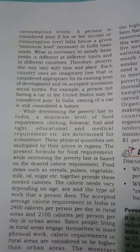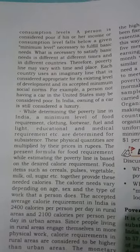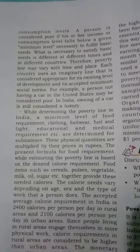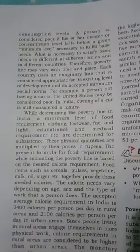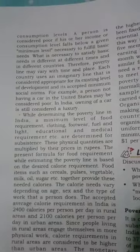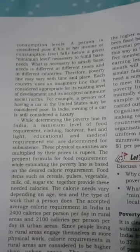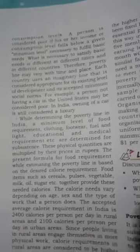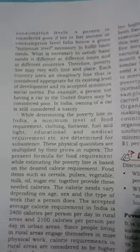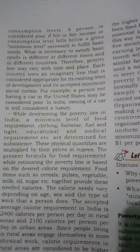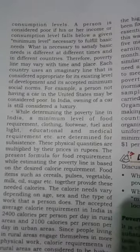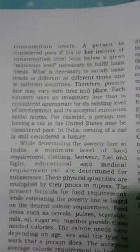Poverty lines may vary with time and place. Each country uses an imaginary line that is considered appropriate for its existing level of development and its accepted minimum social norms. The poverty line is made through different processes in different countries, with different income and consumption thresholds. For example, a person not having a car in the United States may be considered poor, whereas in India, owning a car is still considered a luxury.